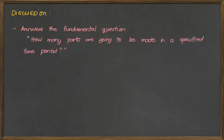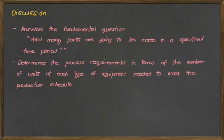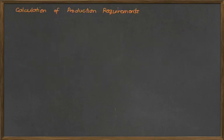Now for our discussion, this answers the fundamental question: how many parts are going to be made in a specified time period and determines the process requirements in terms of the number of units of each type of equipment needed to meet the production schedule. Now we want to know how to calculate the production requirements.